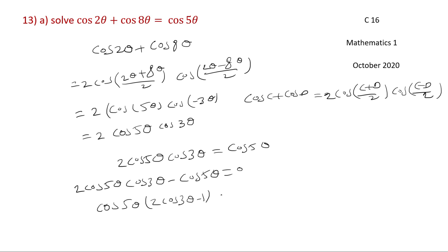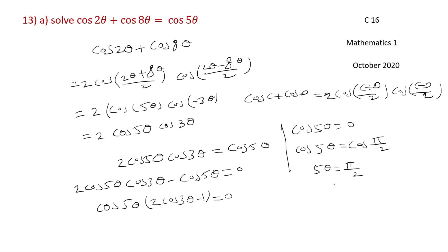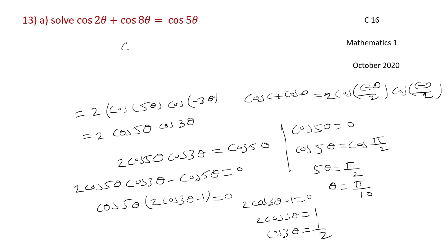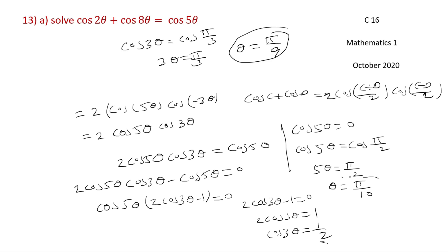Rearranging: 2 cos 5θ cos 3θ minus cos 5θ equals 0, giving cos 5θ (2 cos 3θ minus 1) equals 0. If cos 5θ equals 0, then 5θ equals pi by 2, so θ equals pi by 10. If 2 cos 3θ minus 1 equals 0, then cos 3θ equals 1 by 2, and cos(pi by 3) equals 1 by 2, so 3θ equals pi by 3, giving θ equals pi by 9. Therefore θ equals pi by 10 or pi by 9, i.e., 18 degrees.